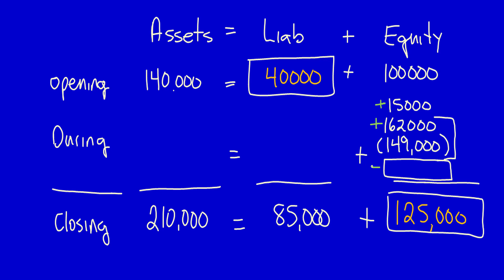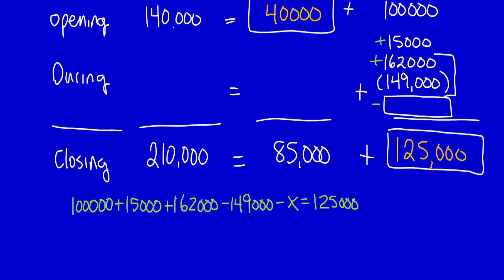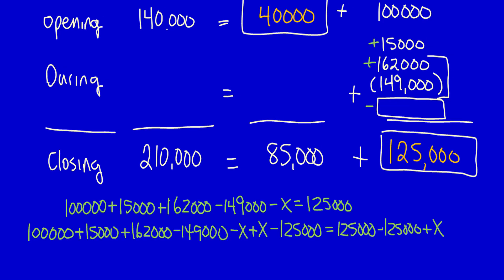Then I subtract this unknown number (dividends) to get $125,000. So: $100,000 plus $15,000 plus $162,000 minus $149,000 minus x equals $125,000. Solving below: adding x to both sides and subtracting $125,000 from both sides, the equation simplifies — negative x plus x equals zero, and the $125,000 terms cancel. Therefore x equals $3,000. Those $3,000 in dividends are subtracted from equity.